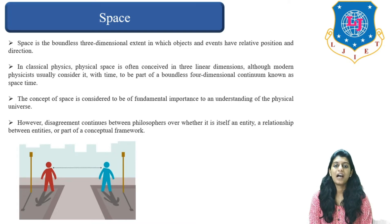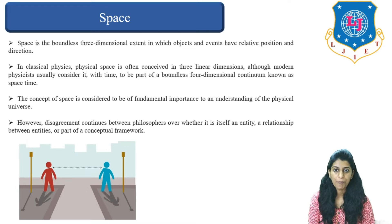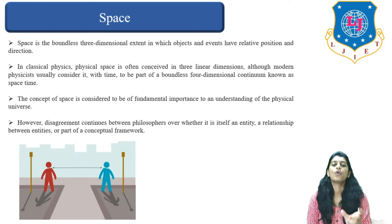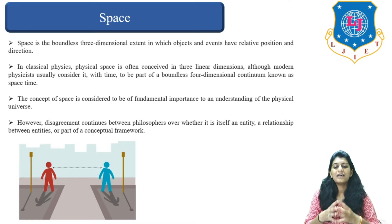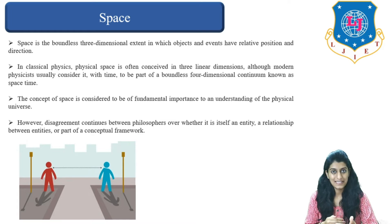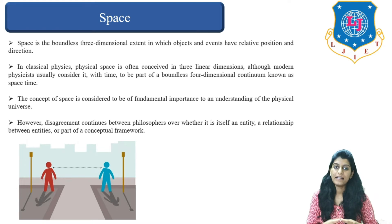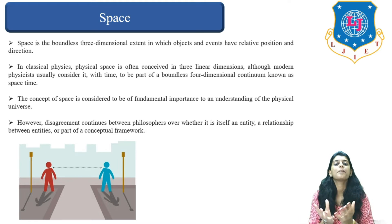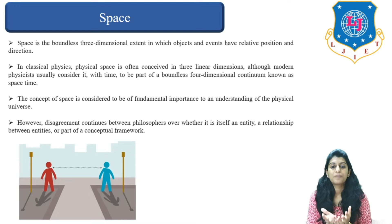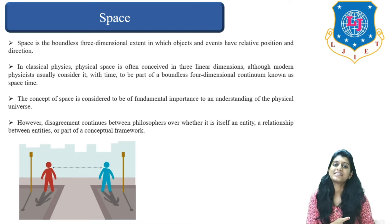The first terminology is Space. What do we understand by the word Space? Space has various definitions — there are many definitions available for this terminology. Space is a boundless three-dimensional extent in which objects and events have their relative position and direction. Basically, space is a three-dimensional extent in which any object or event taking place will have its position and direction.